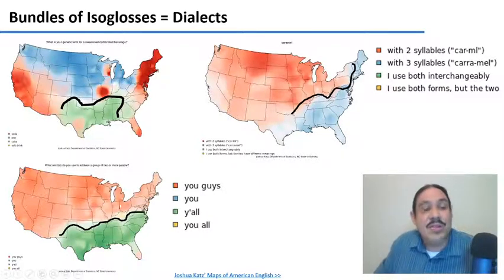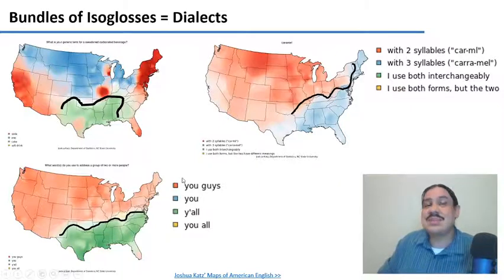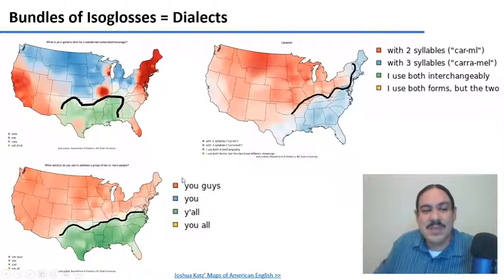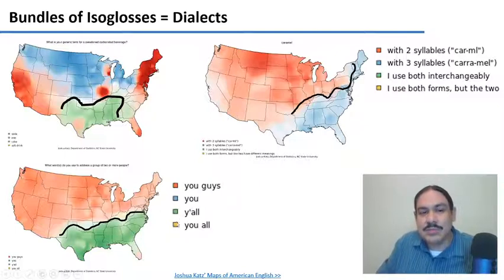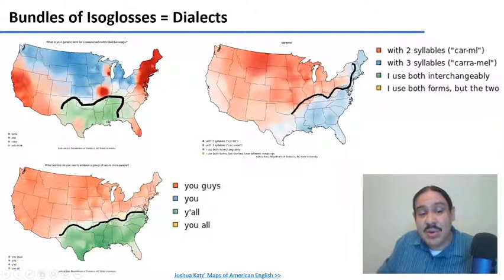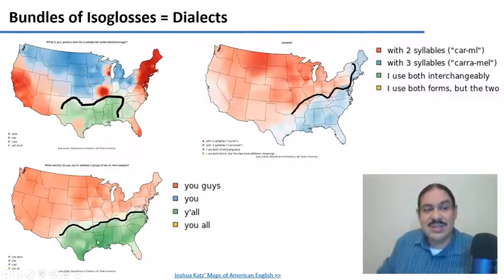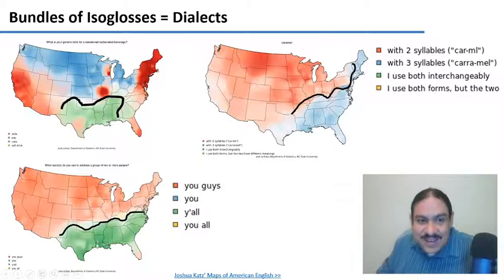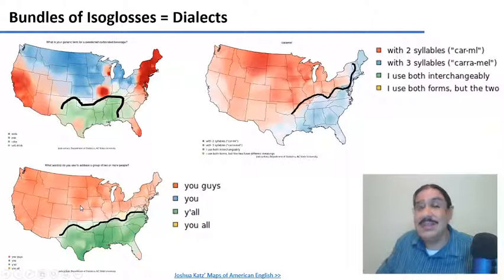Let's look at a third isogloss. Here is a map of how people use the second person plural. The red area has 'you guys' and the green area has 'y'all.' So you can see that we could trace an isogloss separating 'y'all' from 'you guys' from other regions. And again, this isogloss puts Mississippi and Louisiana on one side and Nebraska on the other.